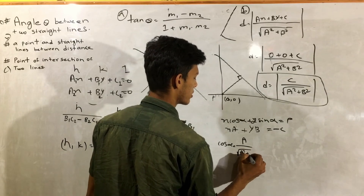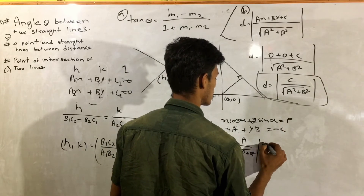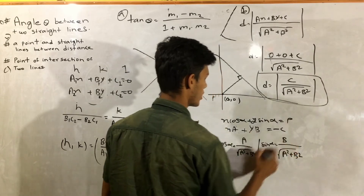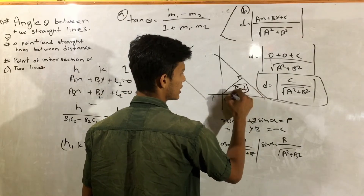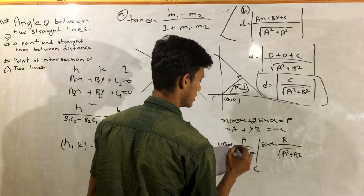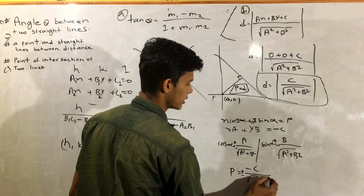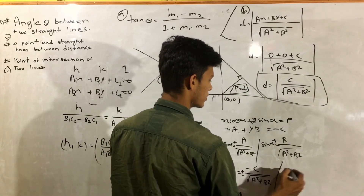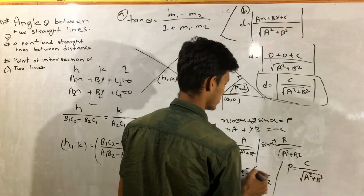a squared plus b squared. sin alpha equals a divided by root under a squared plus b squared. So going to the distance. Minus c — root under a squared plus b squared. P is equal to C divided by root of a squared plus B squared. A squared divided by r is plus going to plus.